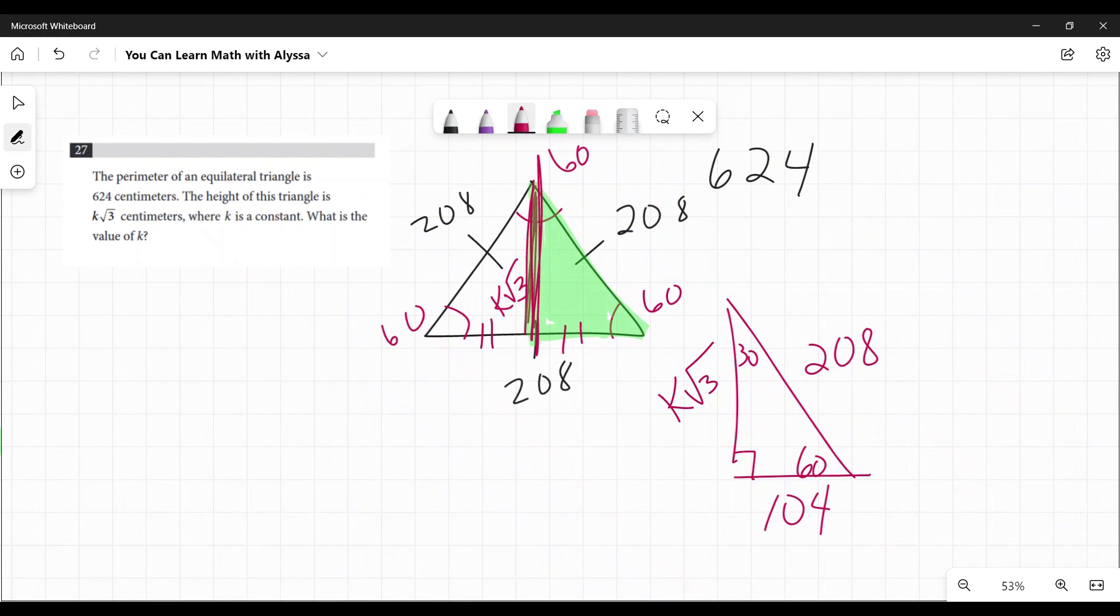You also can just get that from knowing that your 30, 60, 90 triangles are in the form of X, 2X, and X square root of three. So if this is 2X, 208, then this bottom part X, I must divide by two and get 104.